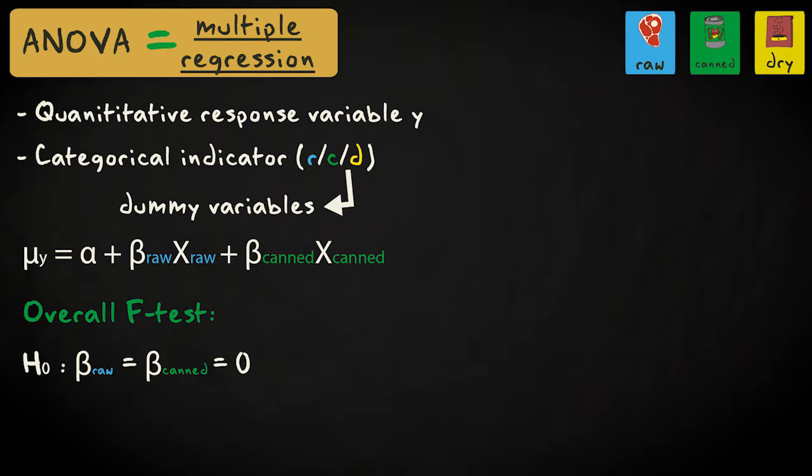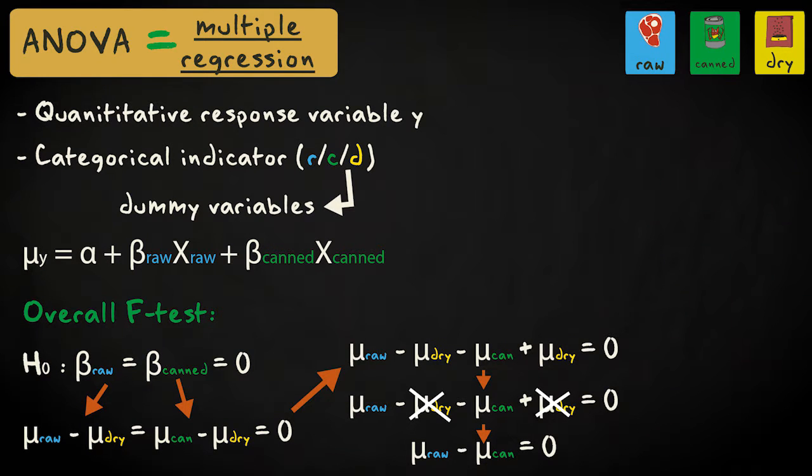With an overall f-test, we test the null hypothesis that all regression coefficients are zero. So we're testing whether the difference between the raw and dry food group is zero and whether the difference between the canned and dry food group is zero. If we rewrite this equation, we can see that we also implicitly test whether the raw and canned group differ from zero.